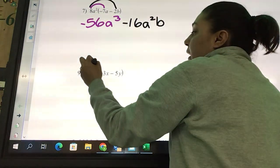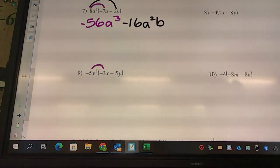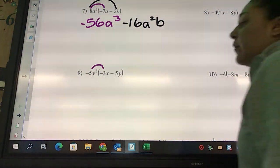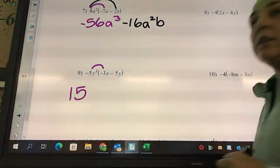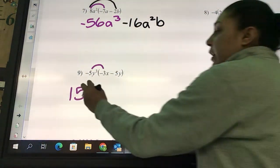Problem nine. I got negative five, negative five times negative three is 15. And what's my letters going to look like? y³x.